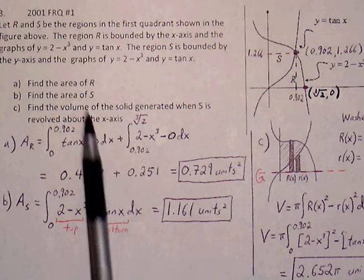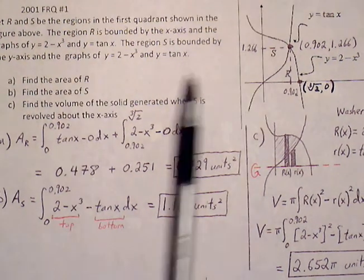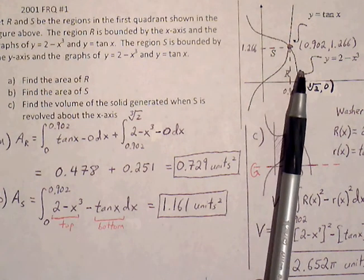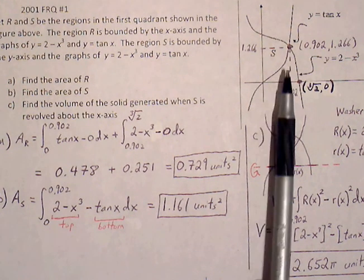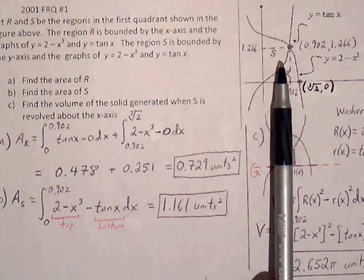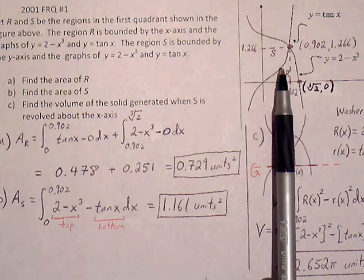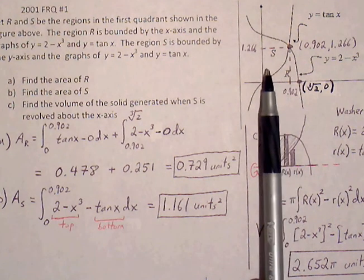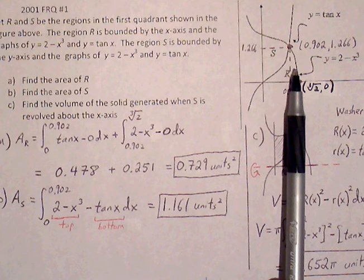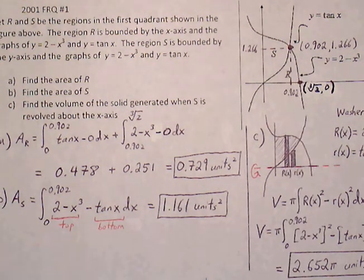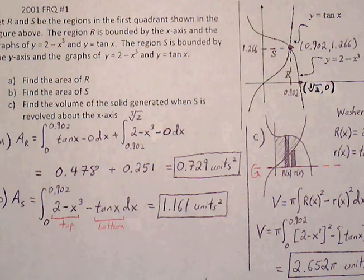Find the area of R. If we look at R, we can do top minus bottom, but depending on where we draw our rectangle, the top curve is going to change. On the left side it will be tangent of x, but on the right side the top curve will be 2 minus x cubed. So that means we have to split this up into two different integral statements.